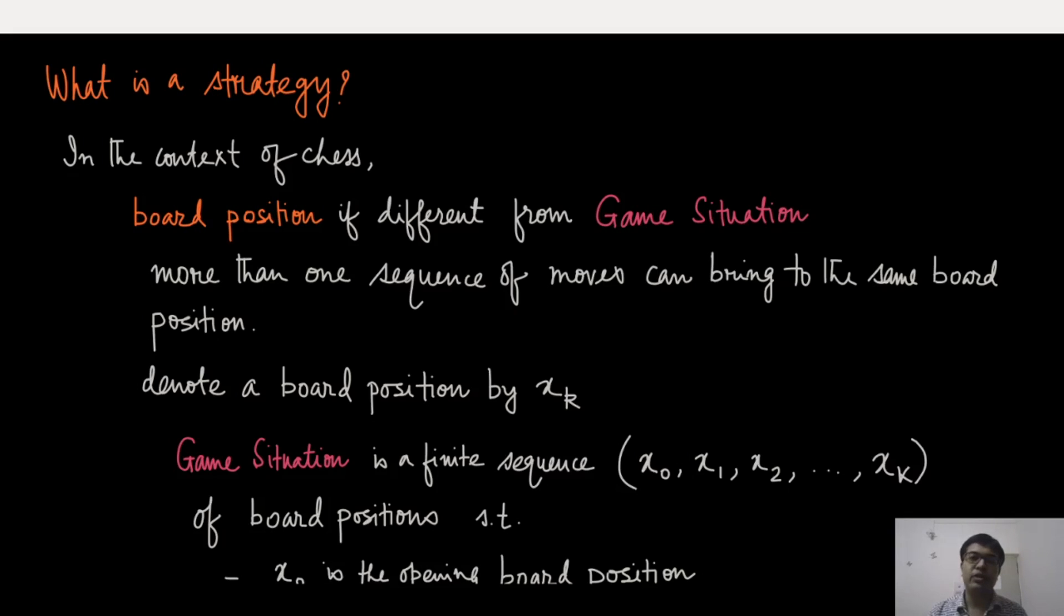Now, we were talking about strategy in various contexts. So let me focus on what we mean by a strategy in the context of the game chess. First, I will have to distinguish what is a board position and what is a game situation. These are two terminologies. Let's understand them. Board position is whenever you are in a game, if you just take a snapshot of the current game, whatever is being played, that will give you a position of all the pieces in the board and we will call that as a board position.